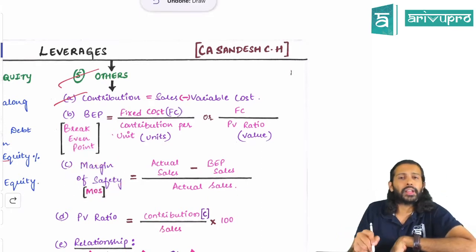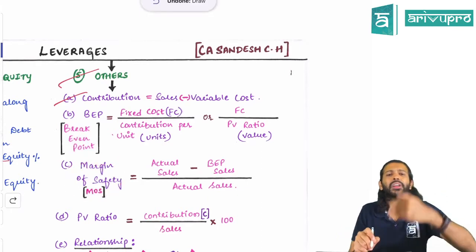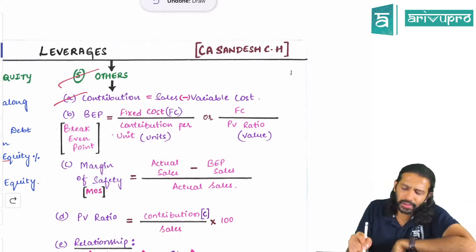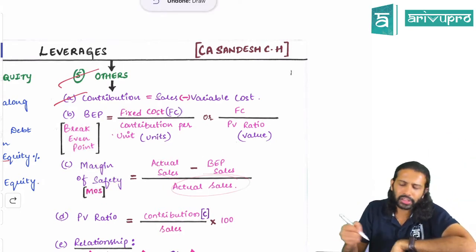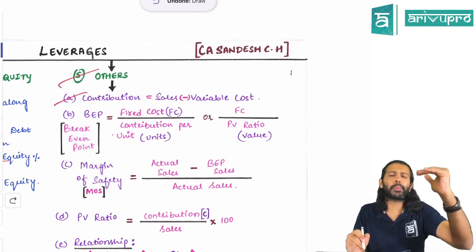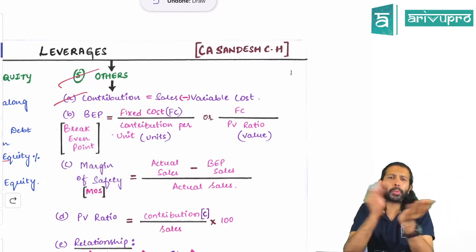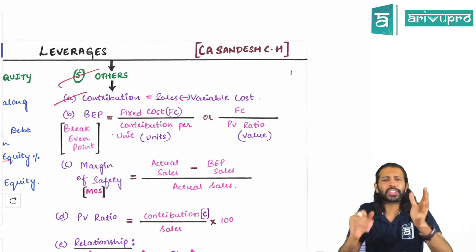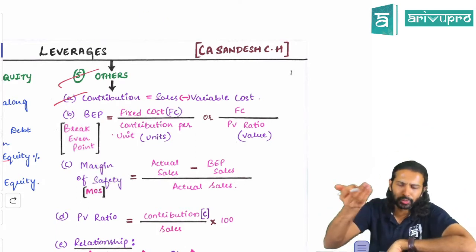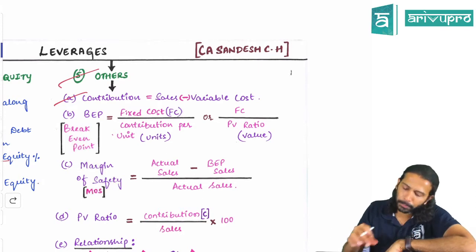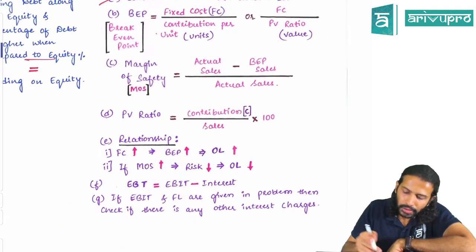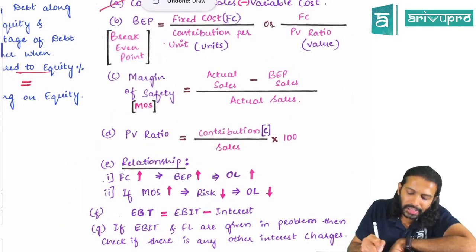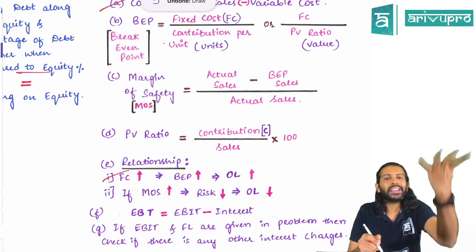Margin of safety is total sales minus break-even point sales, divided by actual sales. The break-even point is the no-profit, no-loss zone, while margin of safety is the profit zone — where the company starts making profits.